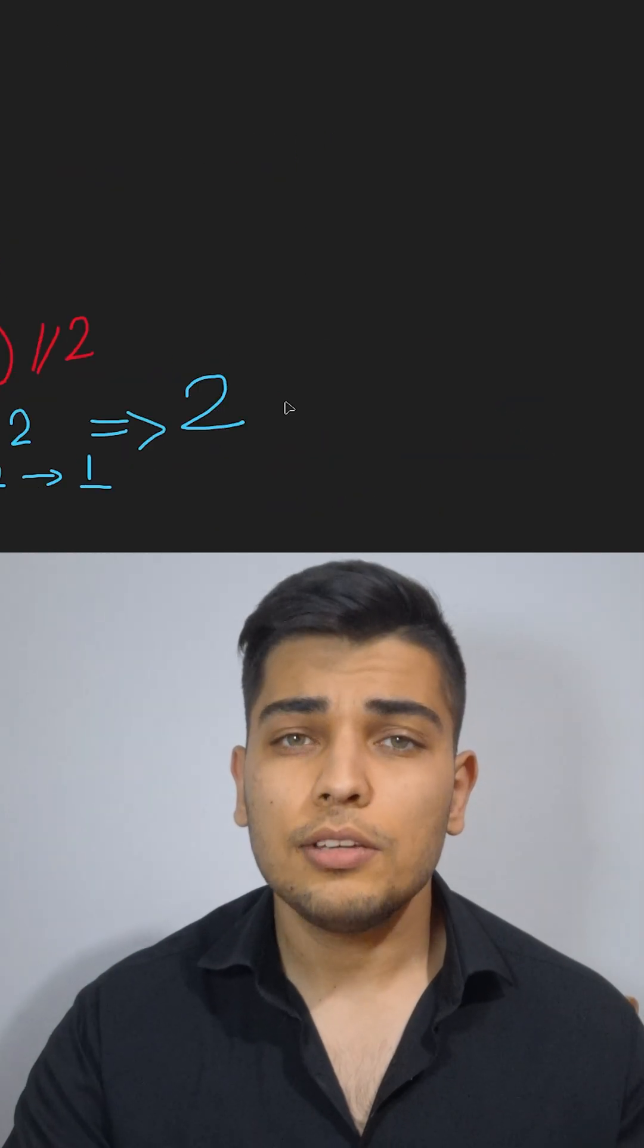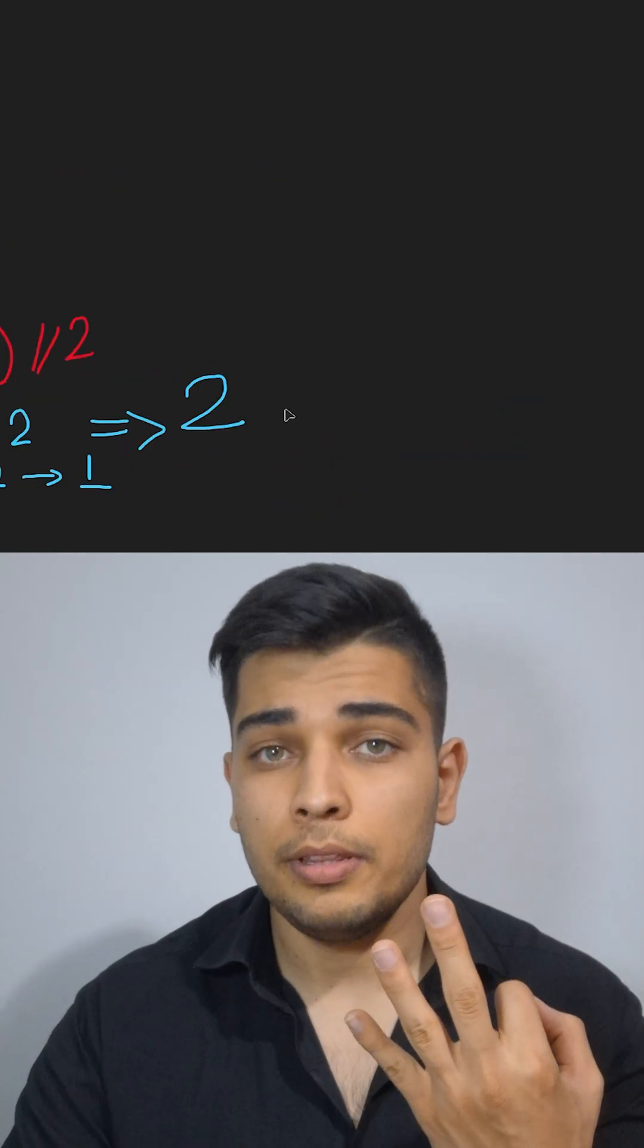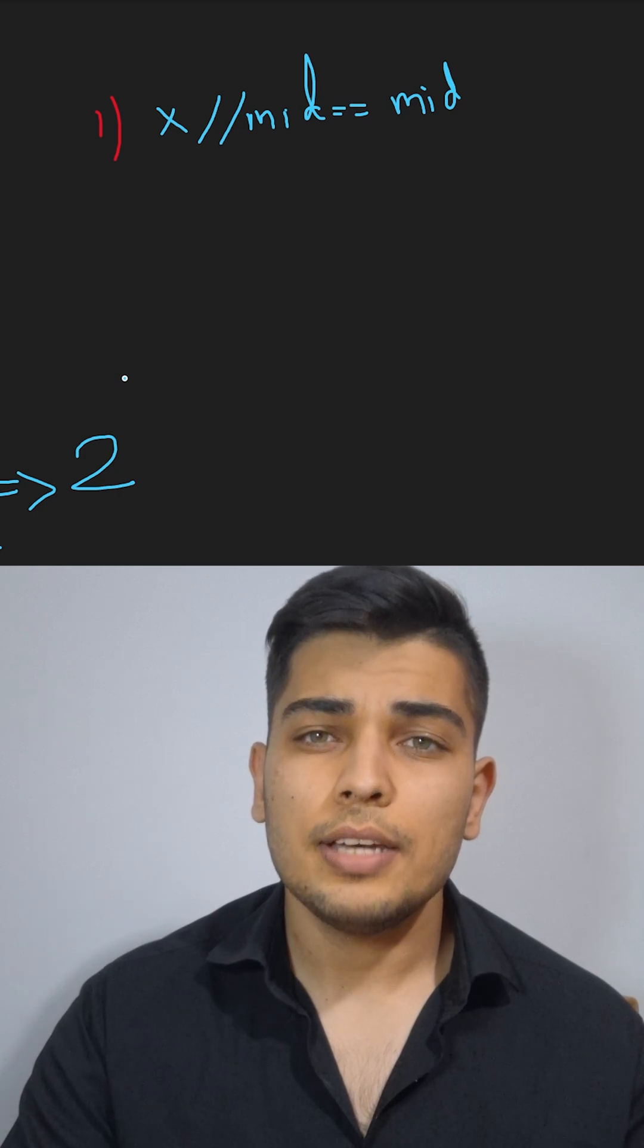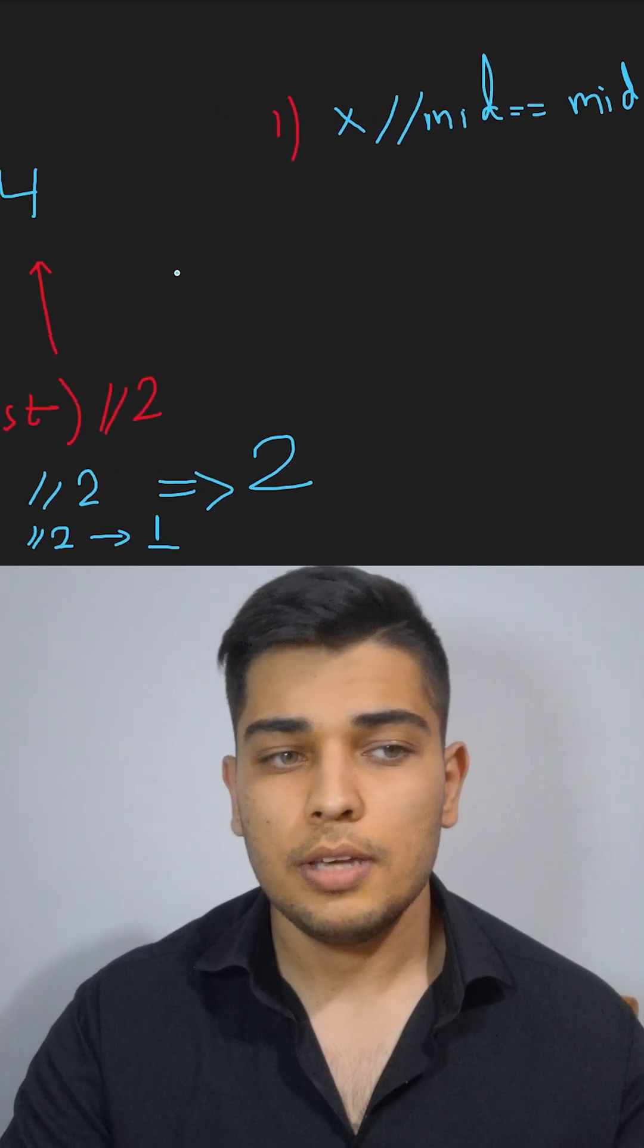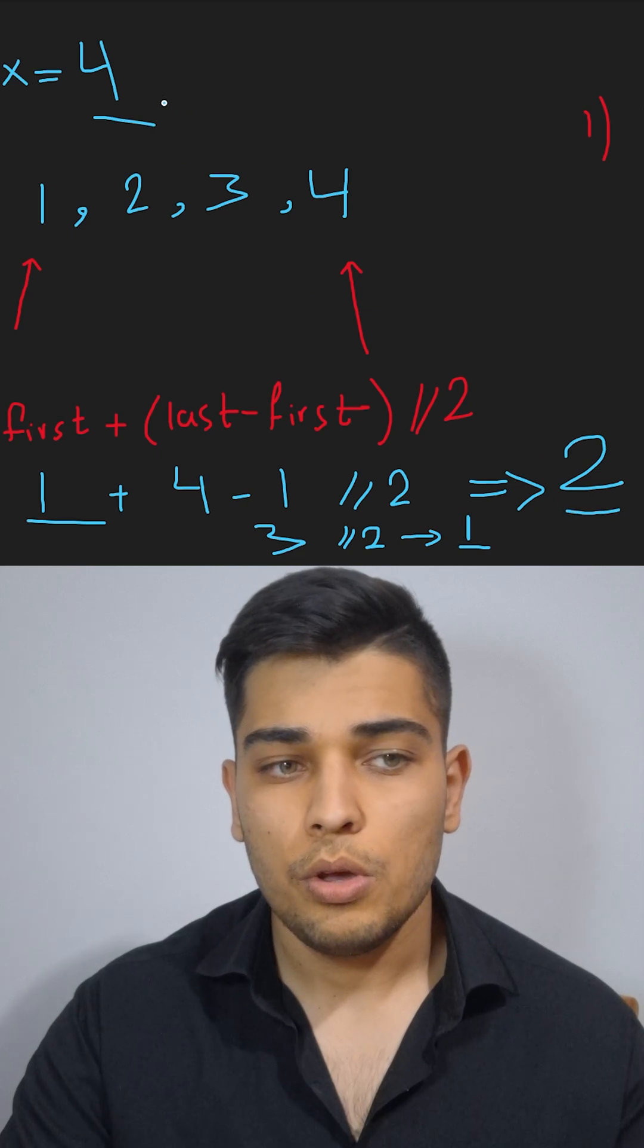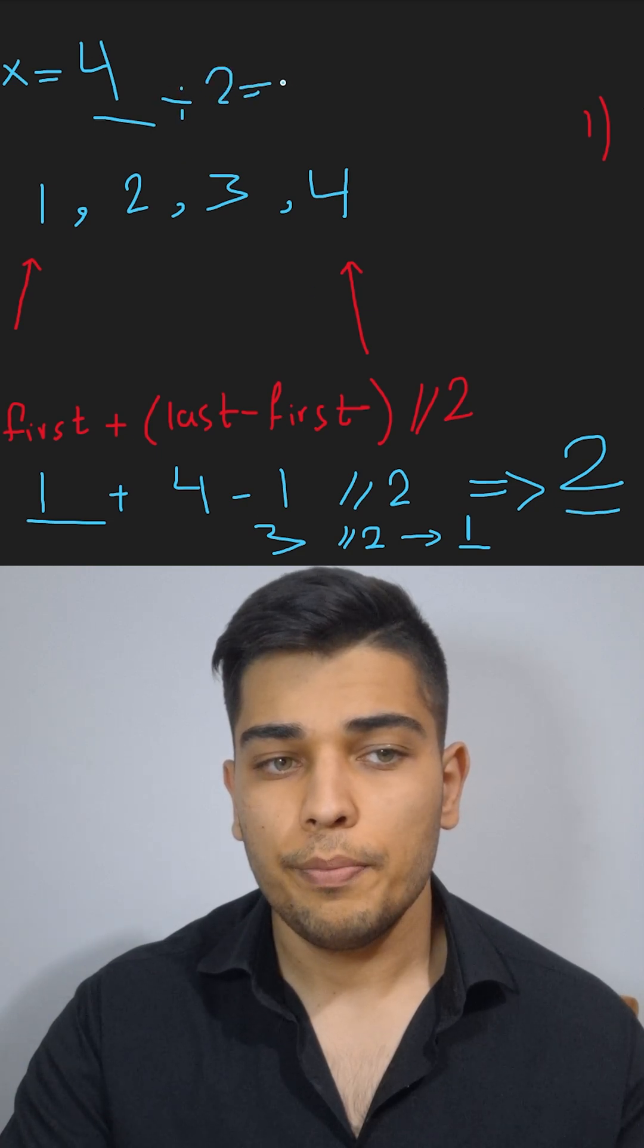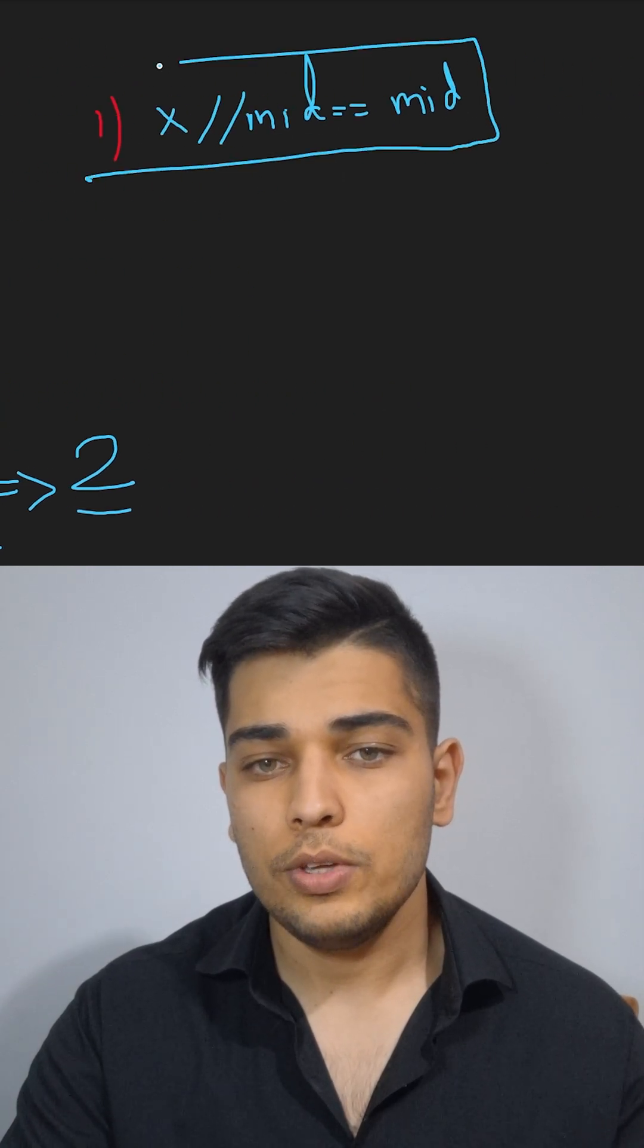After calculating mid, there are three possibilities. First is x divided by mid is equal to mid. In this case, 4 divided by 2 is equal to 2, so this is our case and we just found the answer. But we may not reach the answer so fast every time.